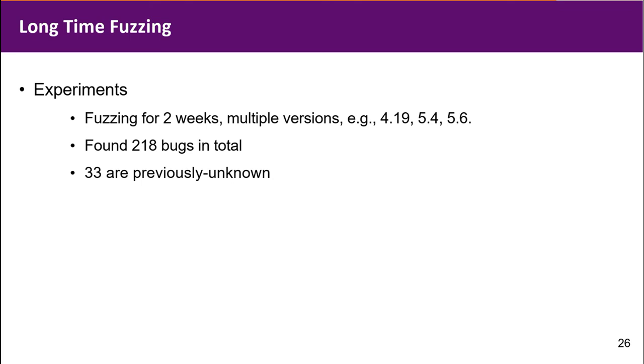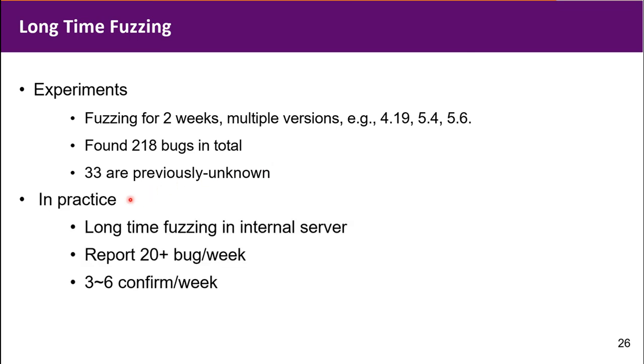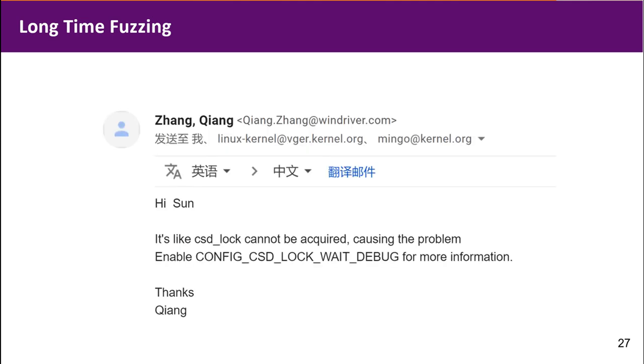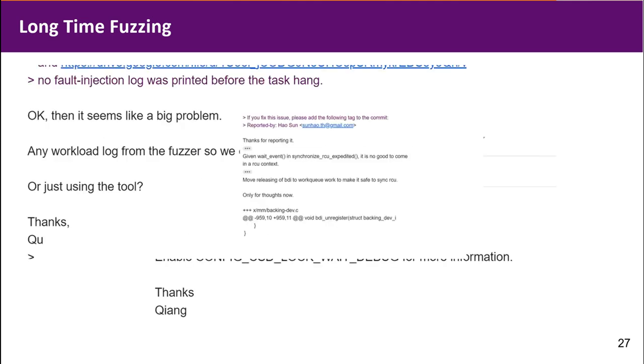In the experiment stage, we found 280 bugs in total, and 33 are previously unknown. In practice, more importantly, we are running Heeler on our internal server, which only has limited resources. However, we can still report more than 20 bugs per week. Here is part of the communication history between us and maintainers.